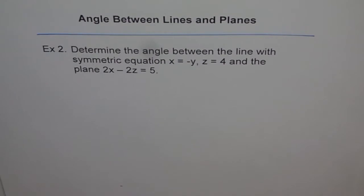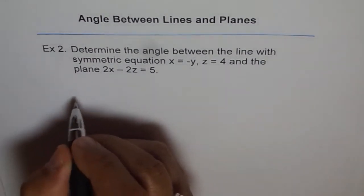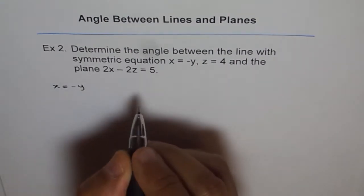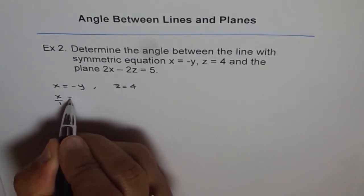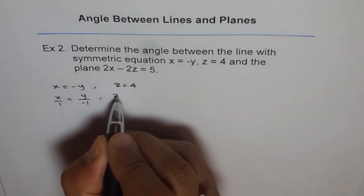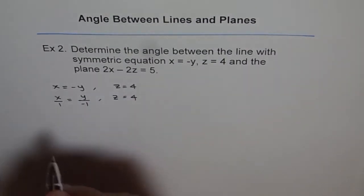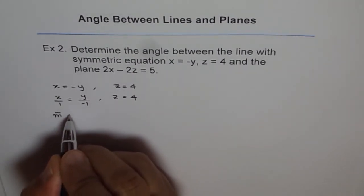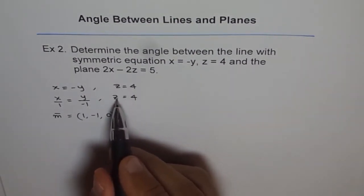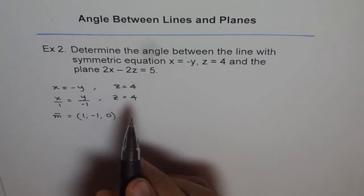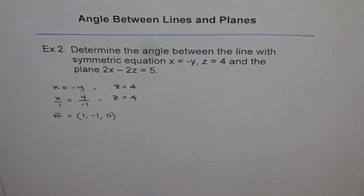We are given the symmetric equation of the line, so let's find the direction of the line. The equation is x equals minus y and z equals 4, which can be written as x over 1 equals y over minus 1, and z equals 4. So the direction vector M is equal to (1, -1, 0). The z-component is 0 since z equals 4 means the line is parallel to the z-axis — you can't write 1 over 0, so the direction vector of the line is (1, -1, 0).